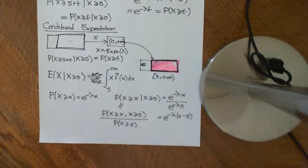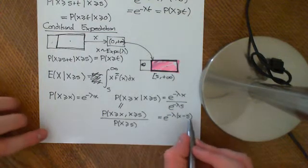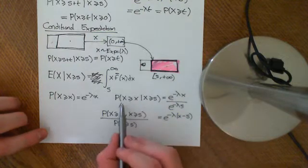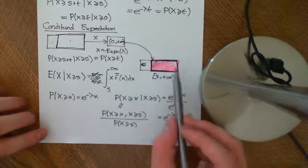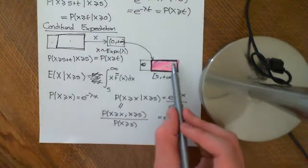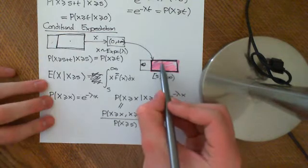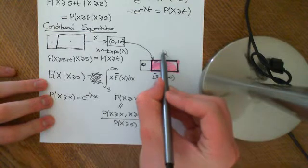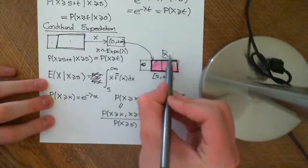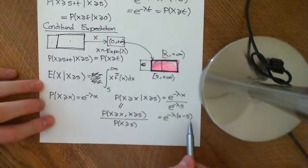Welcome back to this second video on the introduction to conditional expectation. We had just worked out that this was the survival function, i.e. this was the probability that X was going to be greater than or equal to x, given that X was greater than or equal to s. So we were conditioning on this event having happened, taking events from s to plus infinity, and asking what the probability of each of these events is.